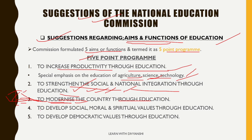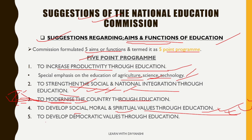The fourth point is to develop social, moral, and spiritual values through education. The commission not only talks about modernizing the country but also about developing social, moral, and spiritual values in people. Educational institutions should provide children with social, moral, and spiritual values. Primary-level children should be told interesting stories so that they learn moral values — meaning that alongside modernization, social, ethical, and spiritual development should also happen.